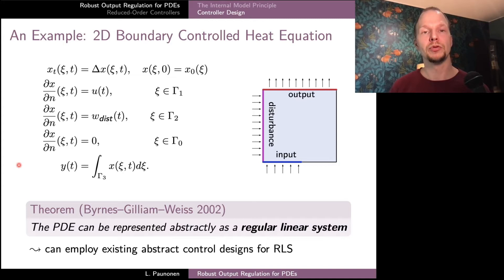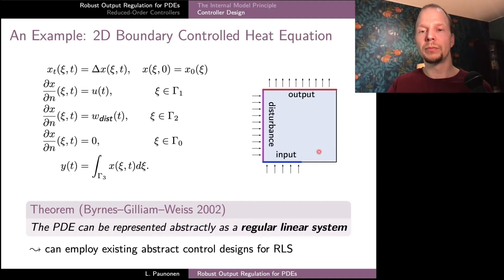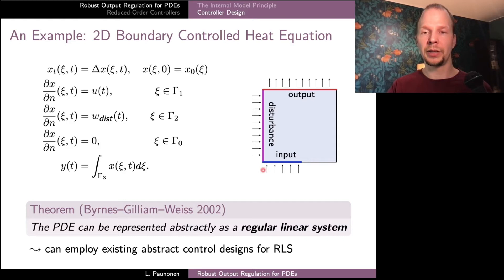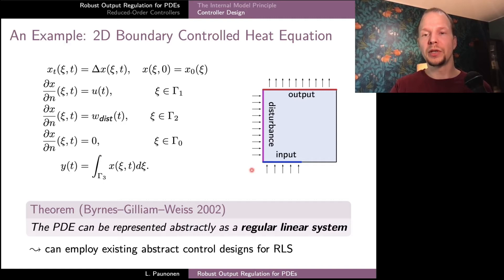We can now consider a particular PDE example to see how the abstract approach works. Consider a pure heat equation on a rectangular domain with Neumann boundary conditions, having a boundary input at the bottom edge of the spatial domain. The measured temperature is the average over the top edge of the rectangle, and we have an external disturbance signal entering from the left. This PDE is unstable due to the Neumann boundary conditions — it has a zero eigenvalue — and the inputs and outputs are non-collocated.